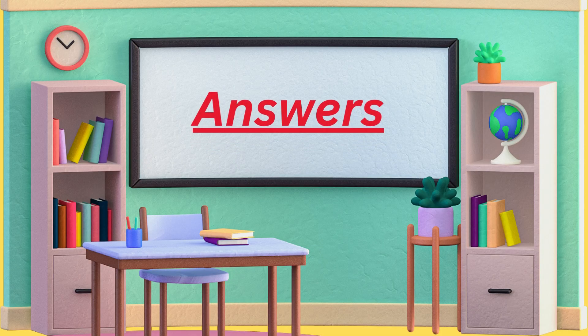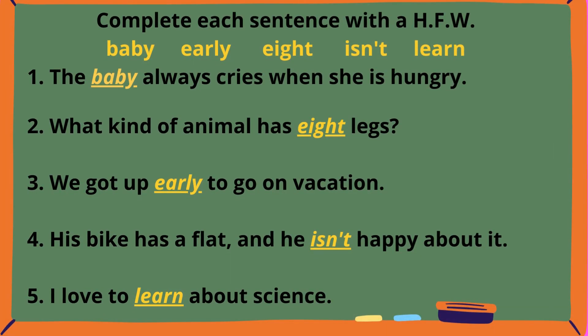Now it's time to reveal the answers to the fill in the blanks and see how you did. I know you did a great job, so let's check and see who got them all correct. Answers for page one: Sentence one — The baby always cries when she is hungry. Sentence two — What kind of animal has eight legs? Sentence three — We got up early to go on vacation. Sentence four — His bike has a flat and he isn't happy about it. Sentence five — I love to learn about science.